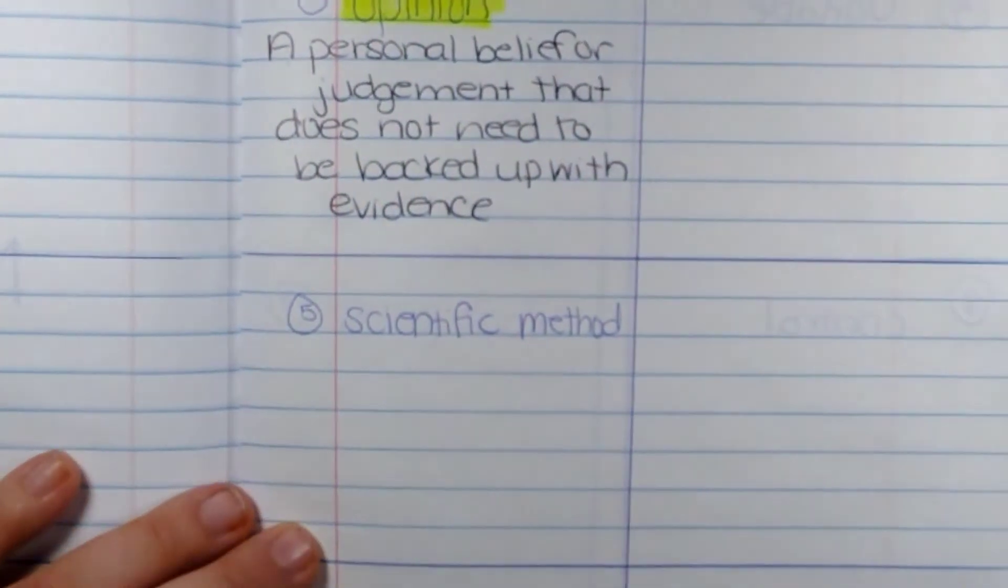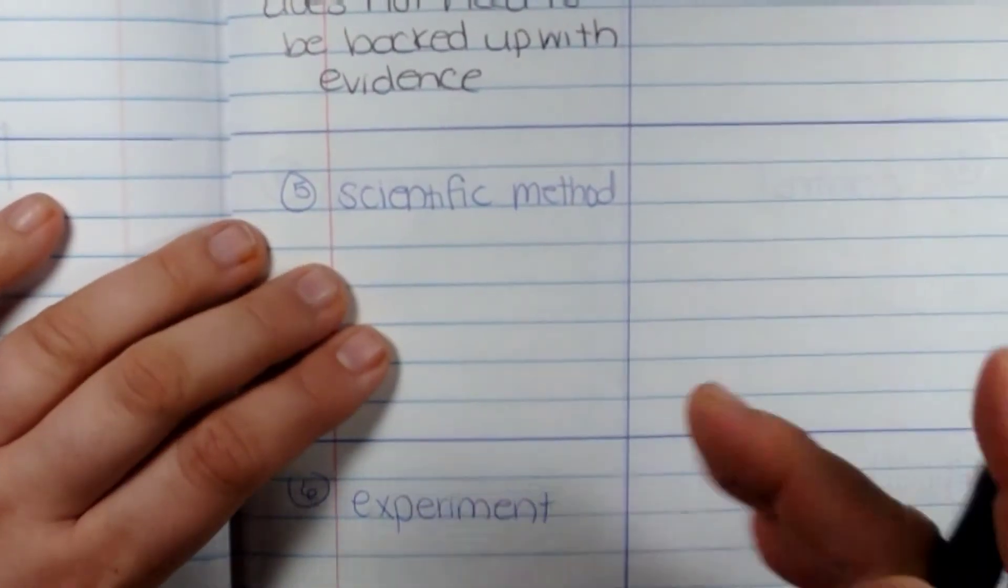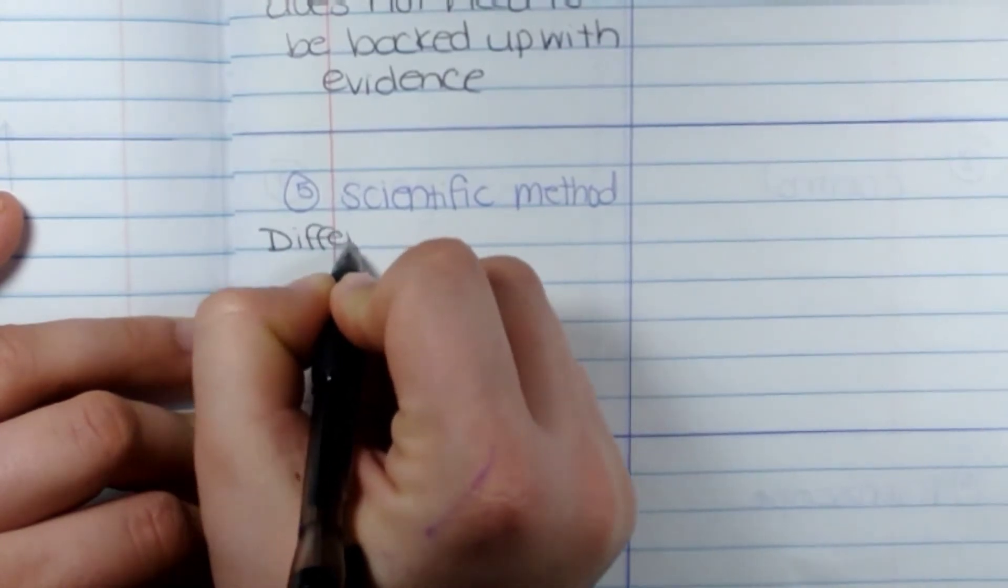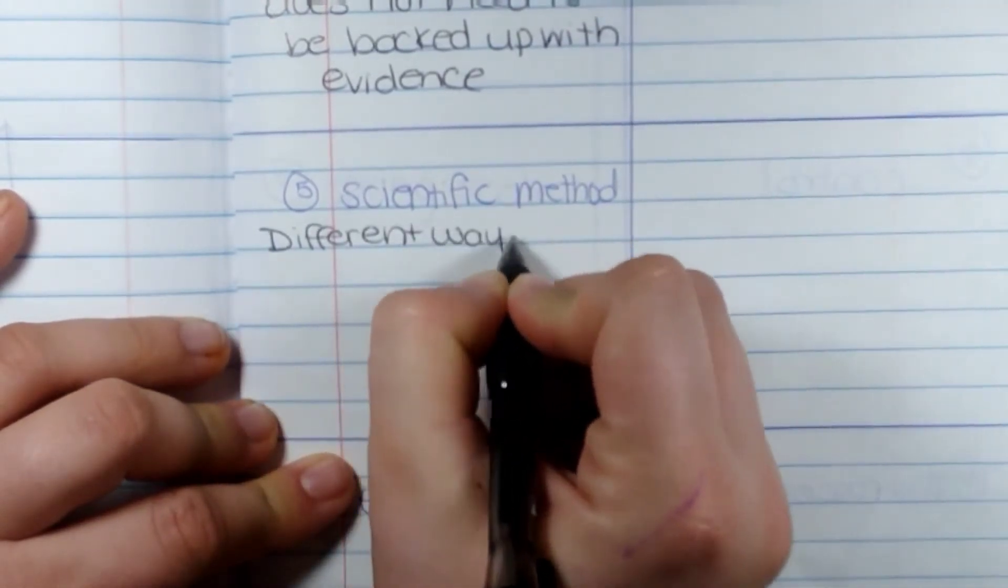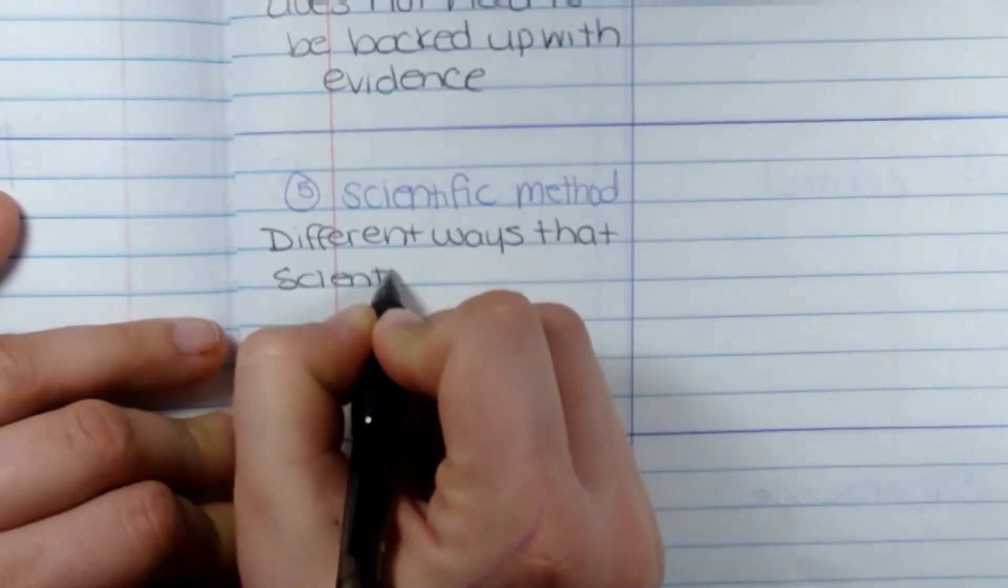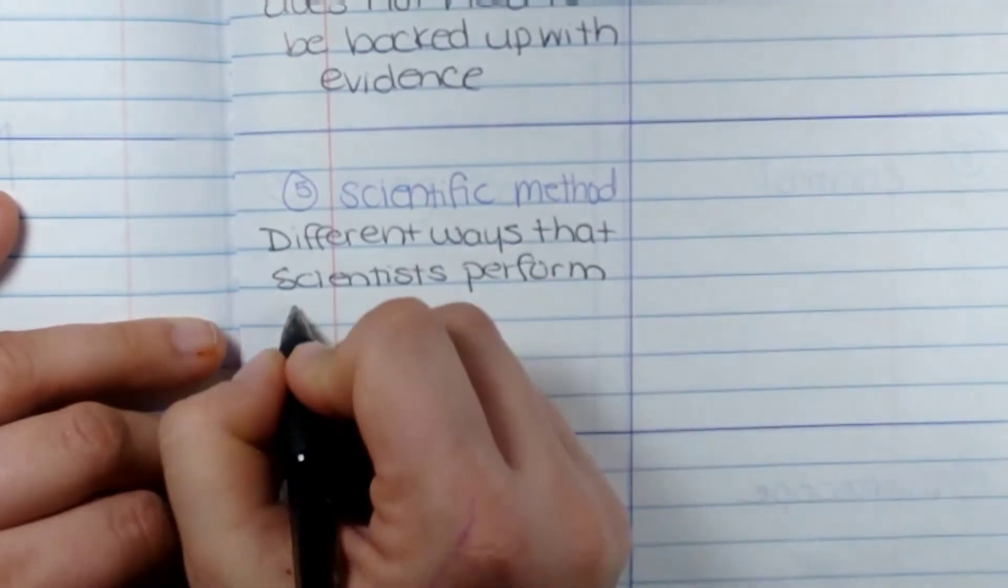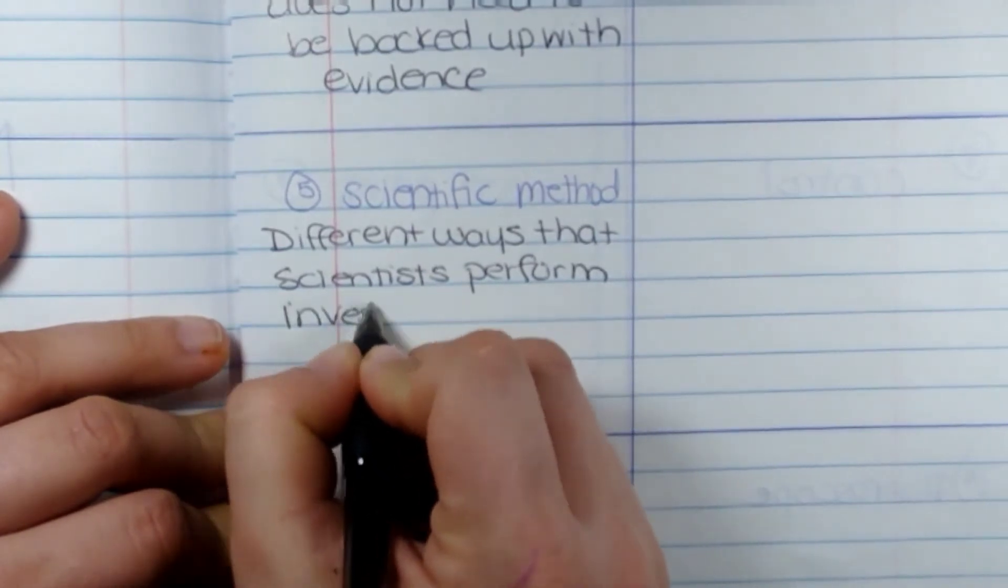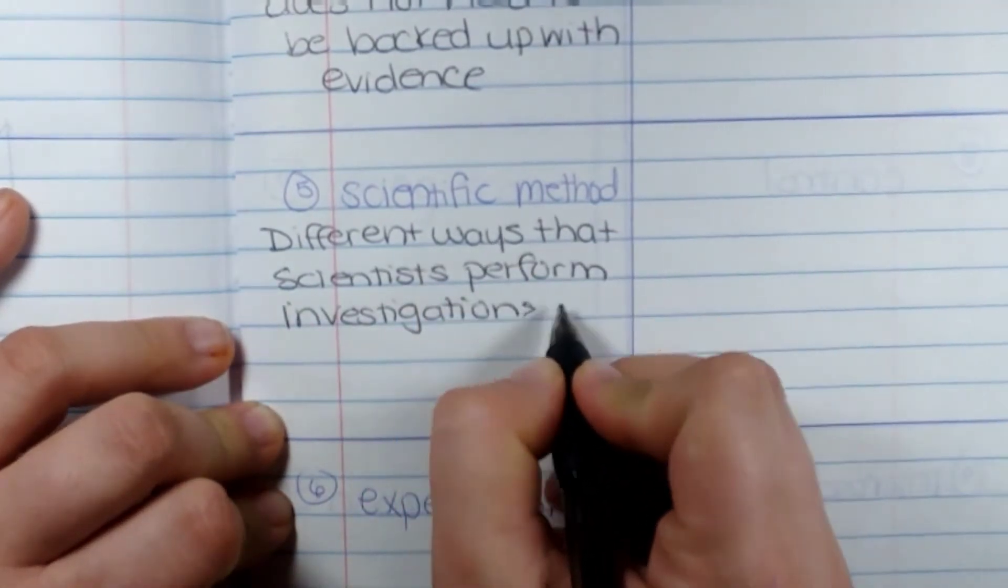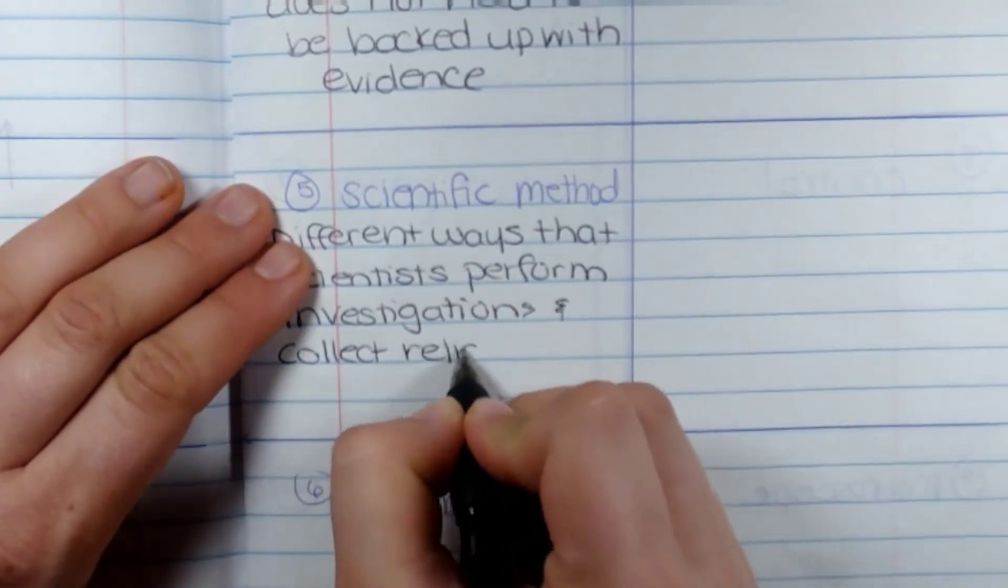Okay, scientific methods. Scientific method is our next word. That is different ways scientists perform investigations and collect reliable data. This entire lesson would be about different kinds of investigations and collect reliable data.